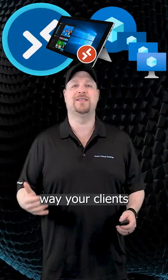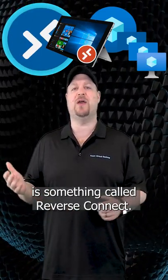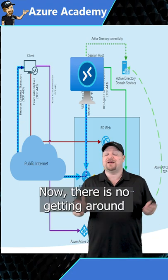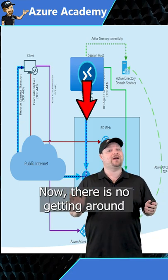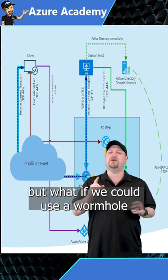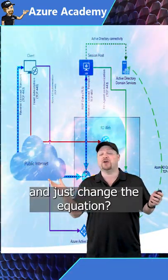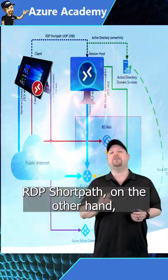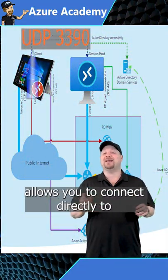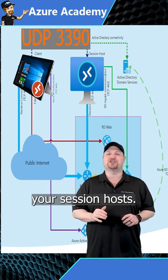The standard way your clients connect to your session hosts is something called Reverse Connect. Now there is no getting around the laws of physics, but what if we could use a wormhole and just change the equation? RDP ShortPath on the other hand allows you to connect directly to your session hosts.